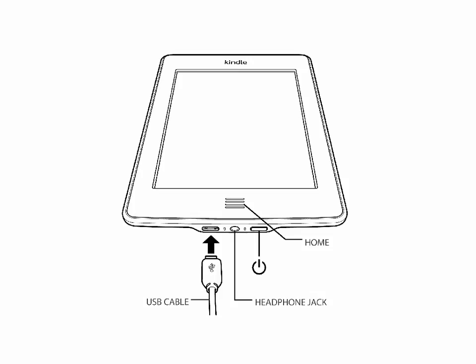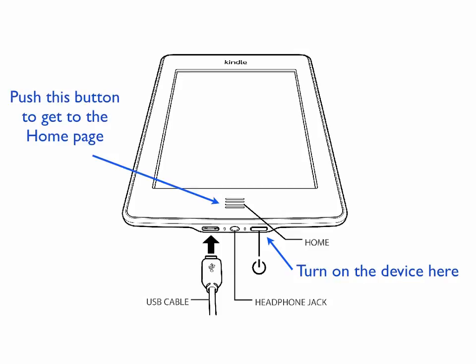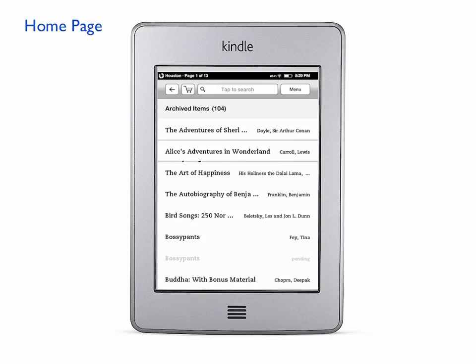To turn the Kindle on, you touch this button right here. The four lines on the face of the machine are what help you get to the home page, and this is what the home page looks like.